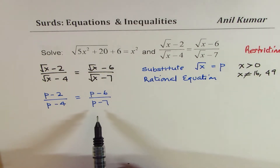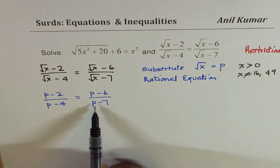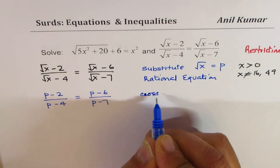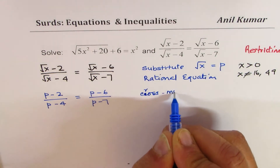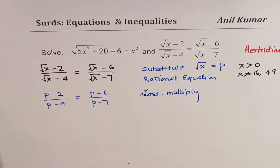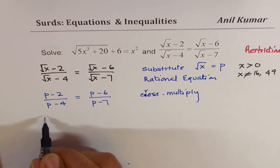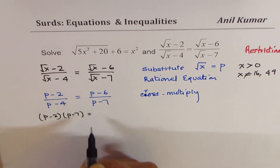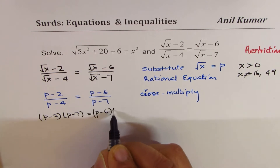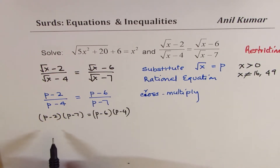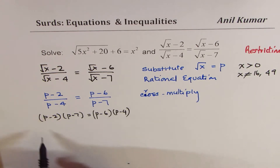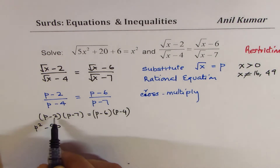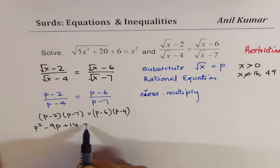This is a rational equation, so let's solve it. Since it is an equation, we can cross-multiply. What we get is (p − 2)(p − 7) = (p − 6)(p − 4). Let's expand: we get p² − 9p + 14 on the left side.